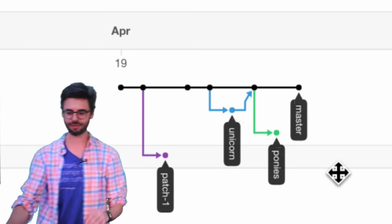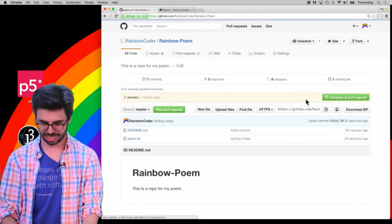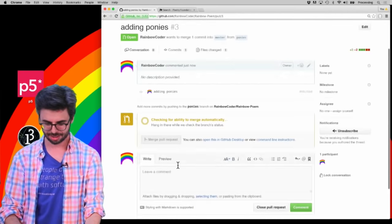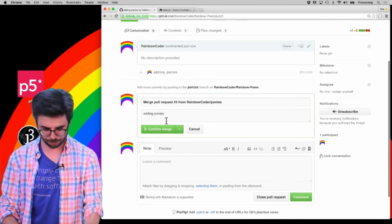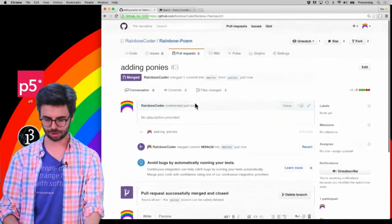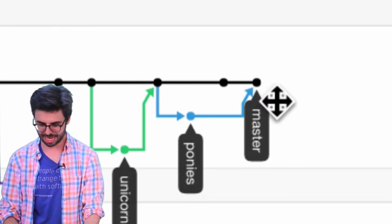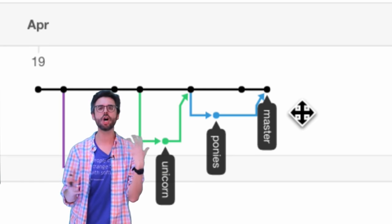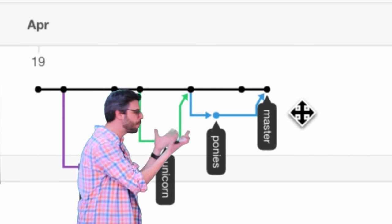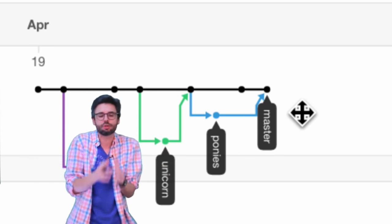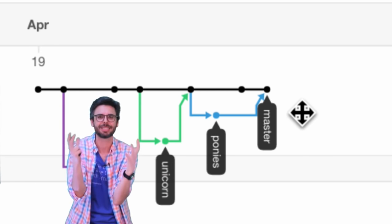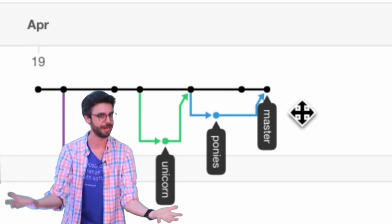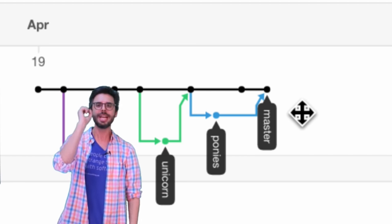Now the network graph shows unicorn went back in, ponies had some changes, and master went ahead independently. Can I merge these two diverged states? Let's try: compare and pull request — no problem, it's able to merge. Create pull request, merge pull request, confirm merge. Looking at the network graph again, you can see how git and GitHub handle multiple diverged branches very powerfully.